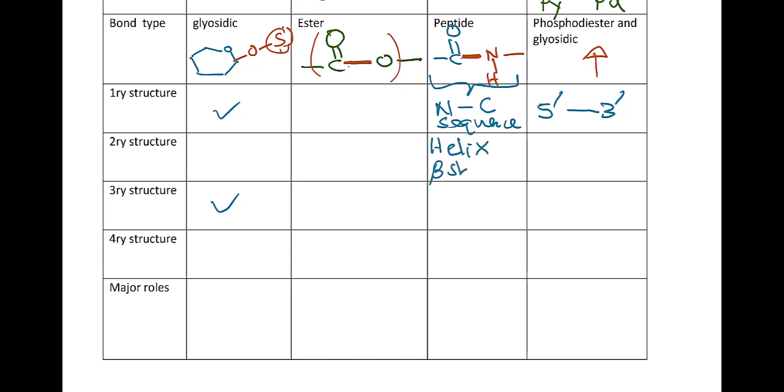Now secondary structures are helixes and beta sheets. They are based on hydrogen bonding. Similarly, hydrogen bonding will make double helixes or hairpins or clover leaves in nucleic acids.